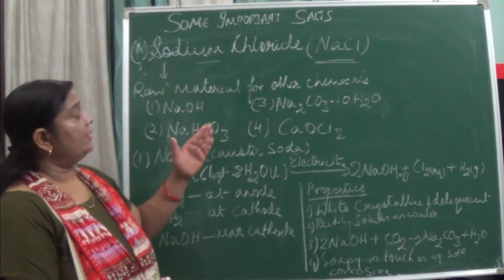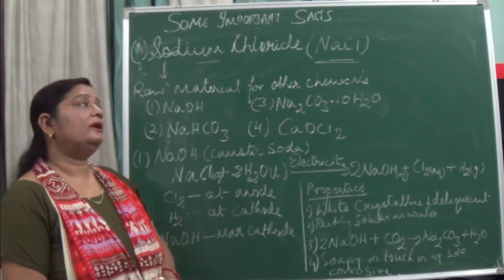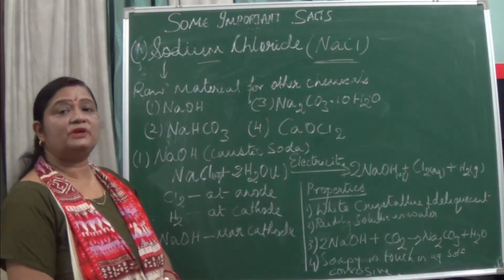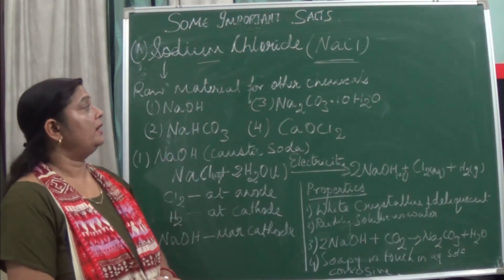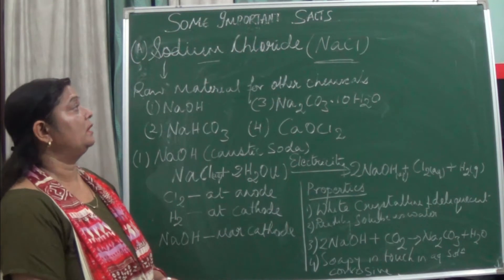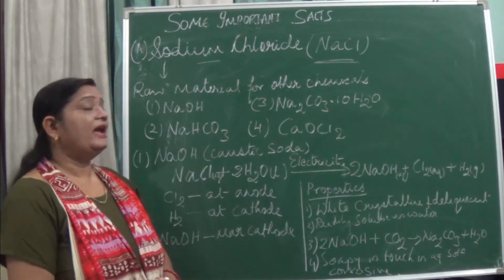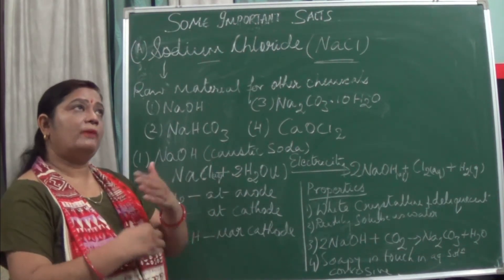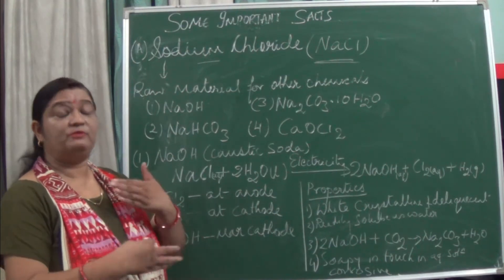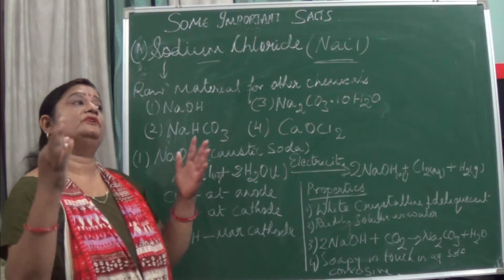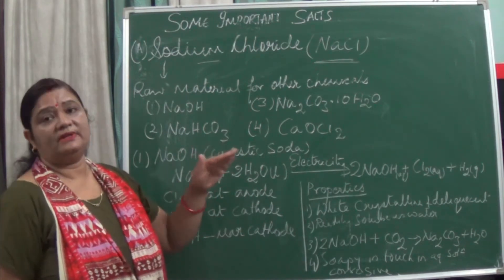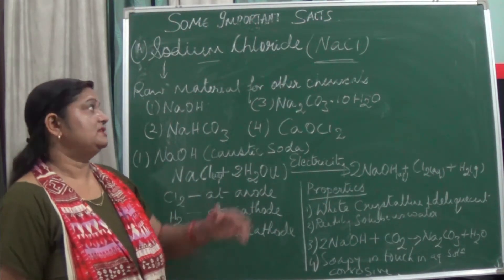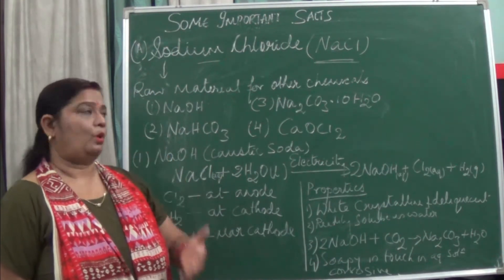Sometimes sodium chloride appears brown or blackish in color because it contains some impurities. Another type of sodium chloride is rock salt. Rock salt is formed in areas where a sea existed long ago — over the course of years the sea dried up and sodium chloride was left behind, giving us rock salt. So one type is sea salt and another is rock salt.